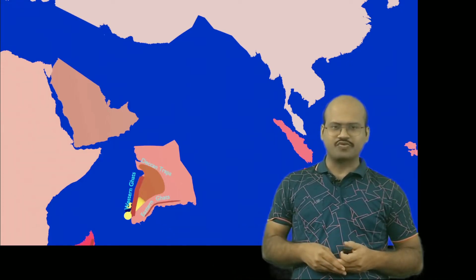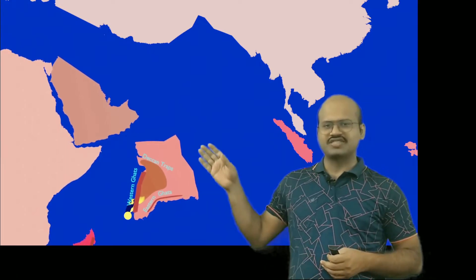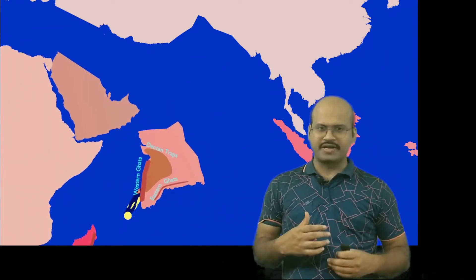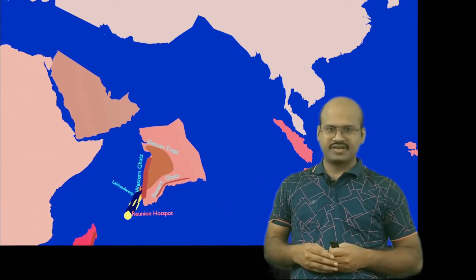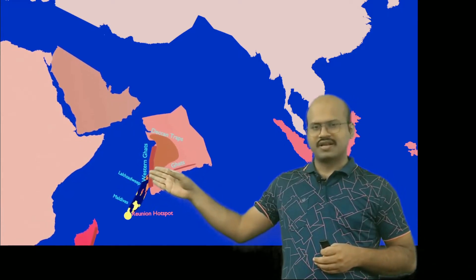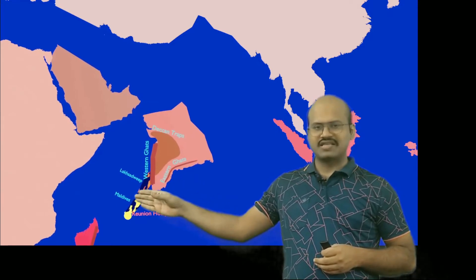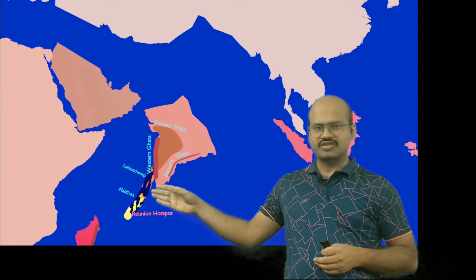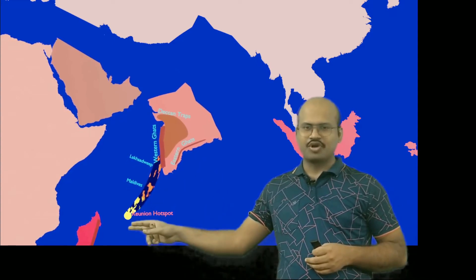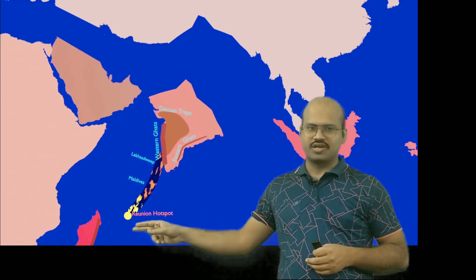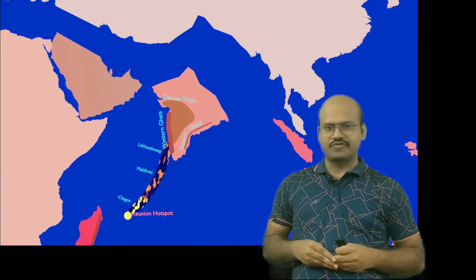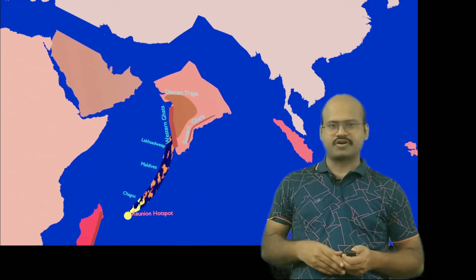Due to tectonic movement, the Indian subcontinent moved away from the hotspot, but the hotspot continued to emit magma, forming a series of islands. Lakshadweep islands were formed first, then Maldives, then the Chagos Islands. Even Maldives and Mauritius were also formed from the Reunion hotspot.